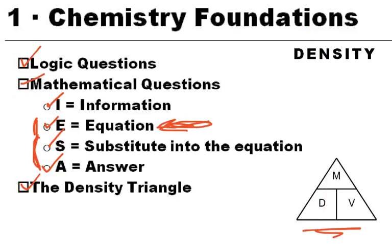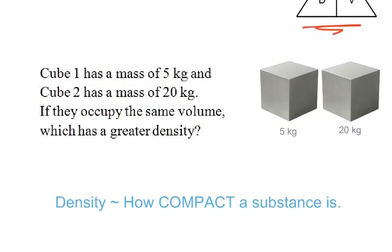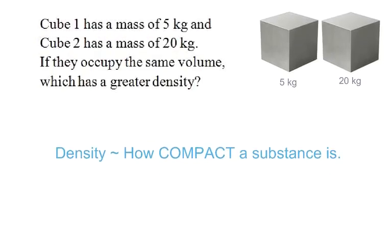So let's take an example. One example here would be, we have a cube one and cube two. So cube one has a mass of five kilograms, cube two has a mass of 20 kilograms. If they occupy the same volume, which one has a greater density? So we have volumes and we have their masses, greater density.